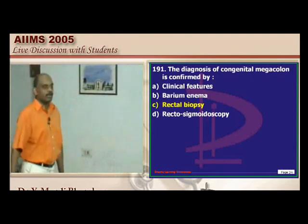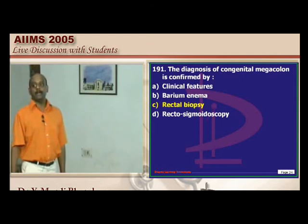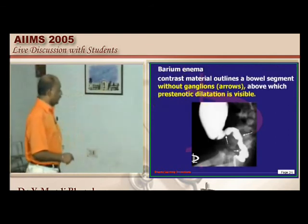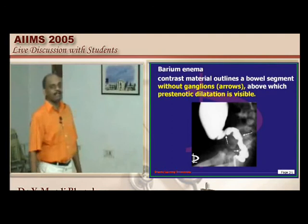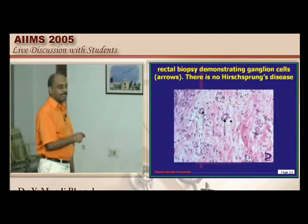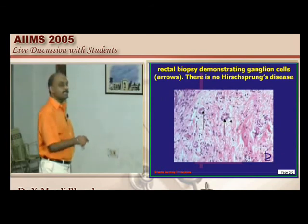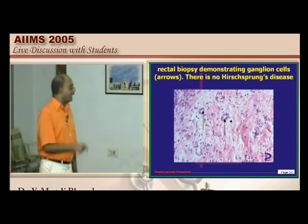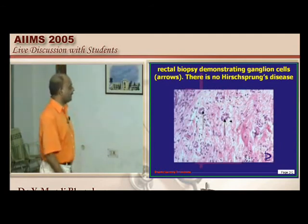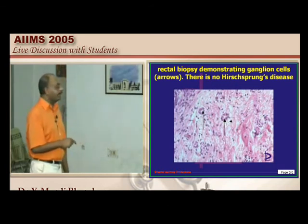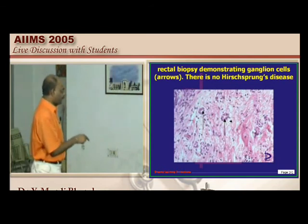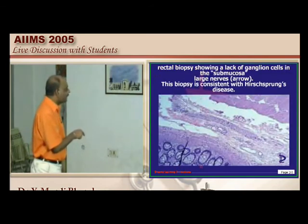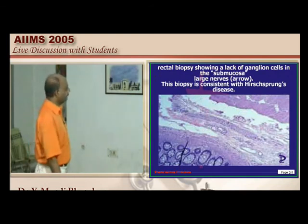Diagnosis of congenital megacolon (Hirschsprung's disease) requires transmural rectal biopsy — not a simple rectal biopsy. Barium enema outlines the aganglionic segment and shows post-stenotic dilatation above it. The dilated segment has normal ganglia; the constricted segment lacks ganglia. On biopsy, thickening of nerves with absent ganglia confirms Hirschsprung's disease.